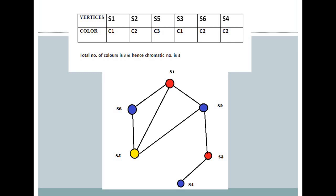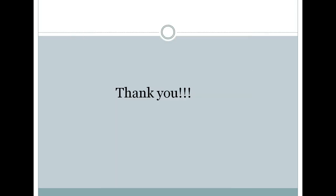Now coming to S5. S5 is being adjacent, so we could paint it with another color, that is C3. Since all the vertices are being painted and the whole graph is being painted, we could say that the chromatic number of the graph is 3, and we could find out that there are a total number of 3 channels required for the stations. Thank you.